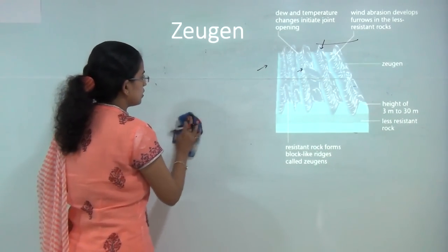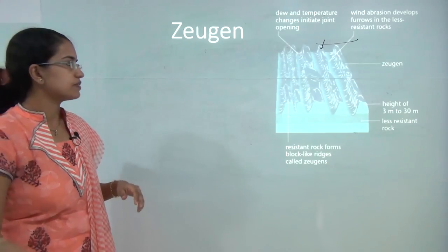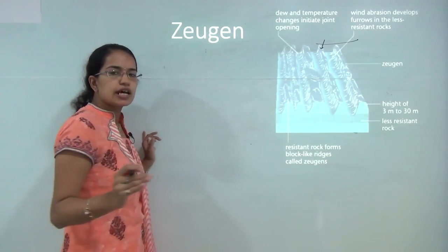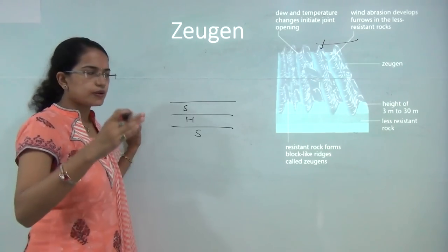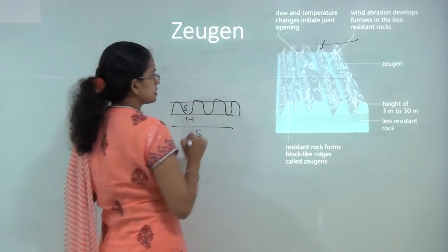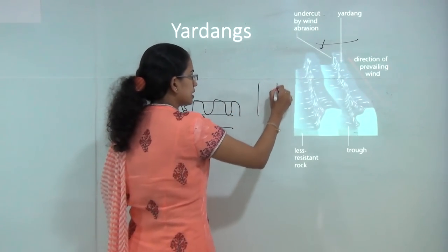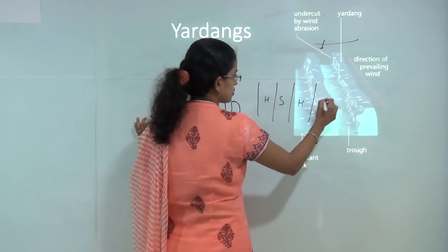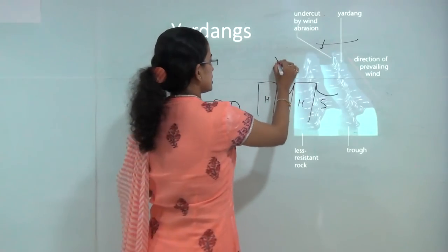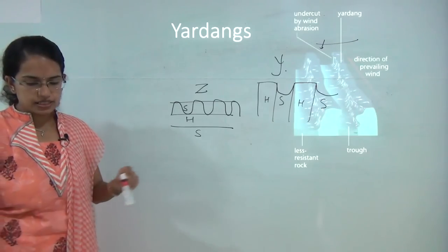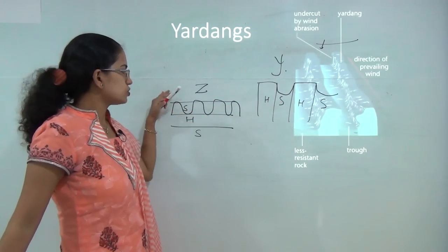The next is Zhijun and Yardang. Many students get confused between the two. Both involve differential erosion, except for the arrangement. Under Zhijun, you have a horizontal arrangement of hard rock and soft rock — the soft rock erodes creating Zhijun features. Under Yardang, the arrangement is vertical: hard rock, soft rock, hard rock, soft rock — erosion takes place along the soft rock regions. The best way to remember: Yardang is vertical while Zhijun is horizontal in nature.